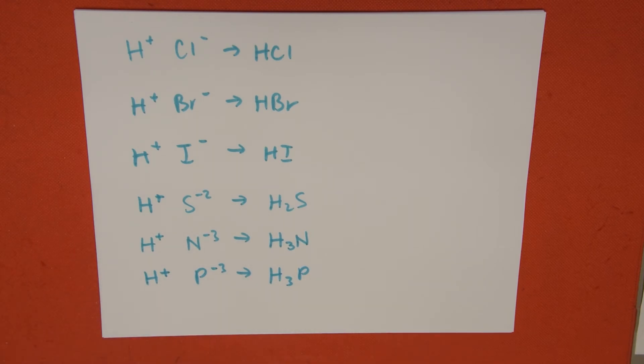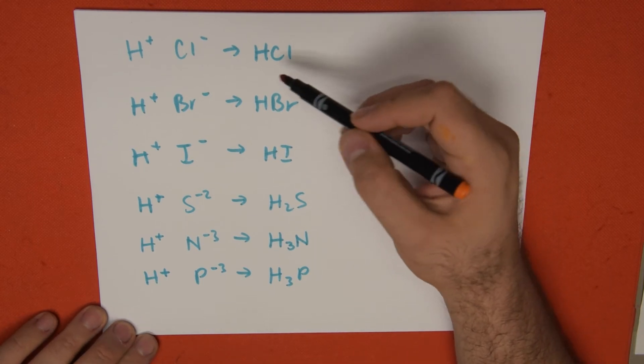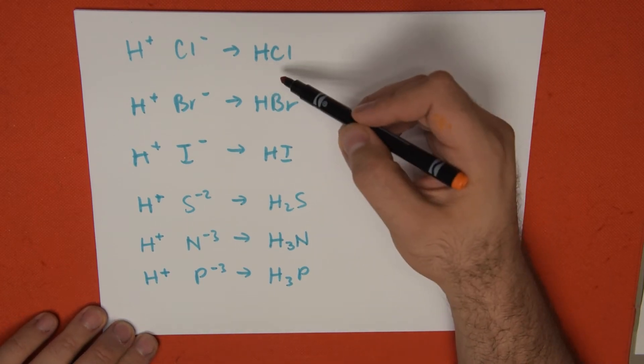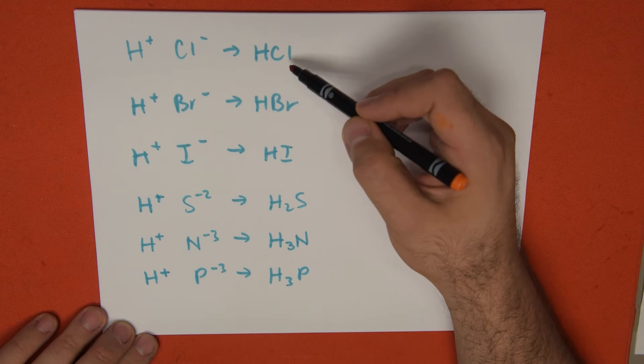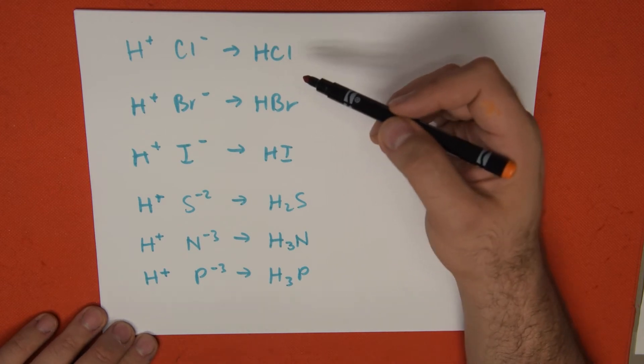Hydracids are very simple to name and identify because they only have one cation element and one anion element. It's not like an oxyanion.